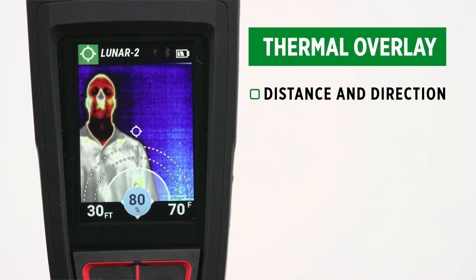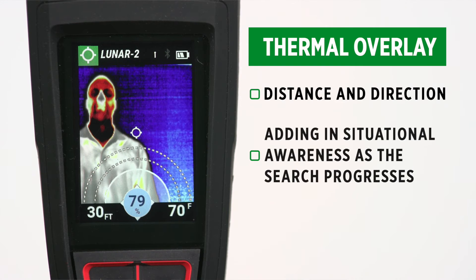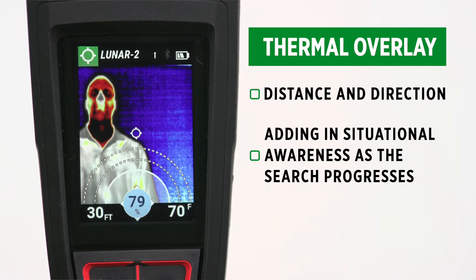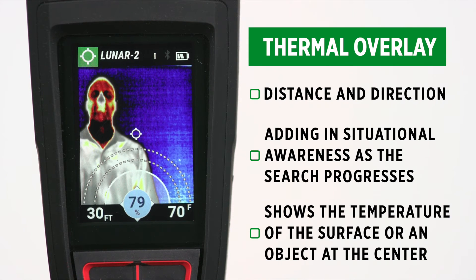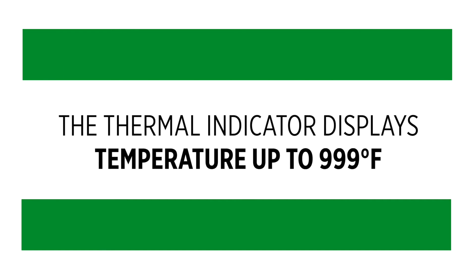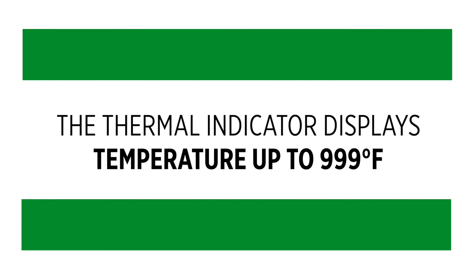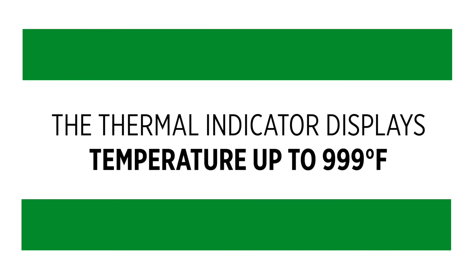Distance and direction appear on the Lunar screen on a thermal overlay, as the third piece of information adding in situational awareness as the search progresses. The thermography indicator shows the temperature of the surface, or an object at the center of the thermal image. Note that the thermal indicator displays temperature up to 999 degrees Fahrenheit.